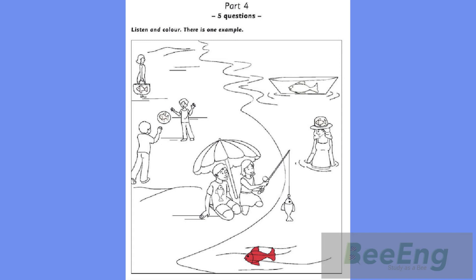3. Can you see the boy under the umbrella? He's wearing a t-shirt with a fish on it. Oh, yes. Good. Color the fish on his t-shirt blue. Okay. A blue fish. That's funny.